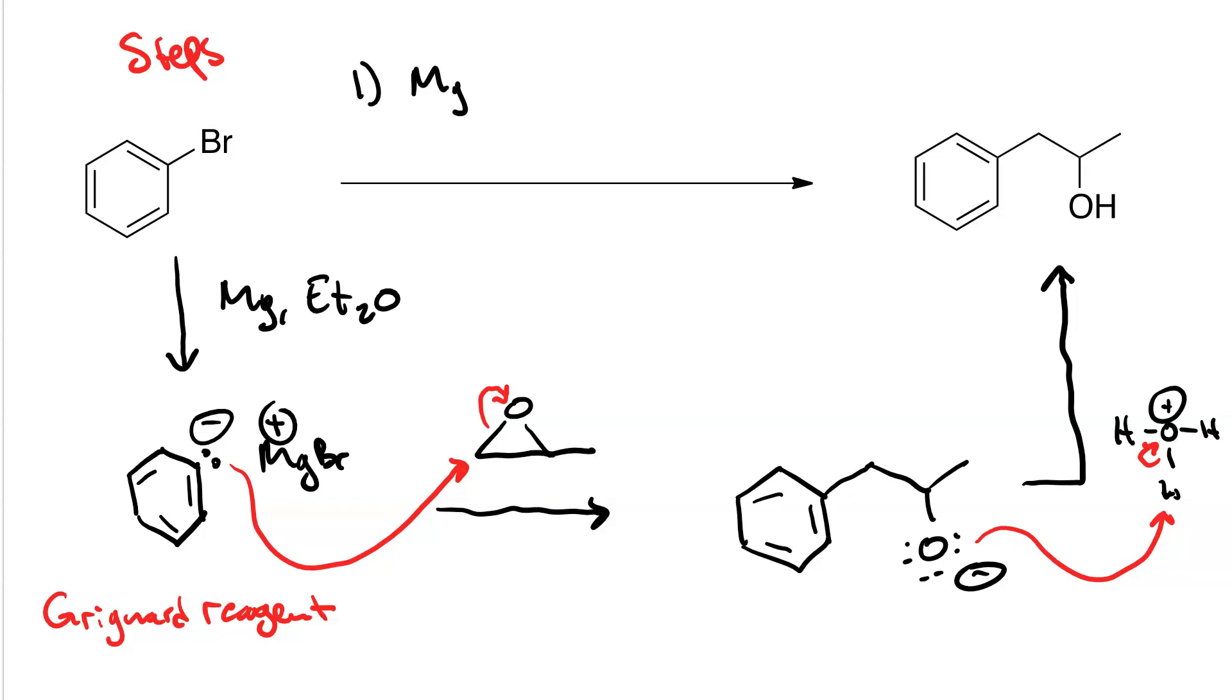One, magnesium and diethyl ether. This forms our Grignard reagent. Two, the Grignard reaction, where we introduce the electrophile. In this case, the electrophile is 2-methyloxorane. Step three, we protonate the alkoxide.